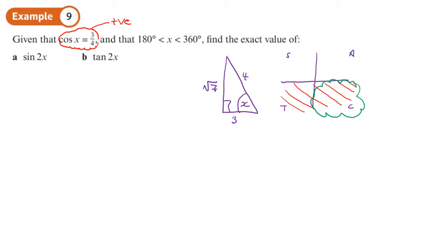Now, if cos x is positive, the only place where it could be out of those two sections that I've highlighted is here. If it was on the other side where t is, cos would be negative, but it's not negative, it's positive. So it has to be actually between 270 and 360. That will make a slight difference to our working.